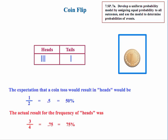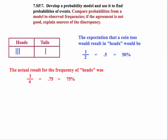You expected it to be 50% instead of 75%. One of the parts of the standard states that you need to compare probabilities from a model to observed frequencies. And if the agreement is not good, explain the sources of the discrepancy. So here, a logical explanation would be that we just haven't done enough trials. We only did four. In fact, if you stop and think about it, all that had to happen for the results to be what we would have expected would have been if one of these heads would have turned out to be tails, and then we would have had exactly 50%. But that's not what actually happened.